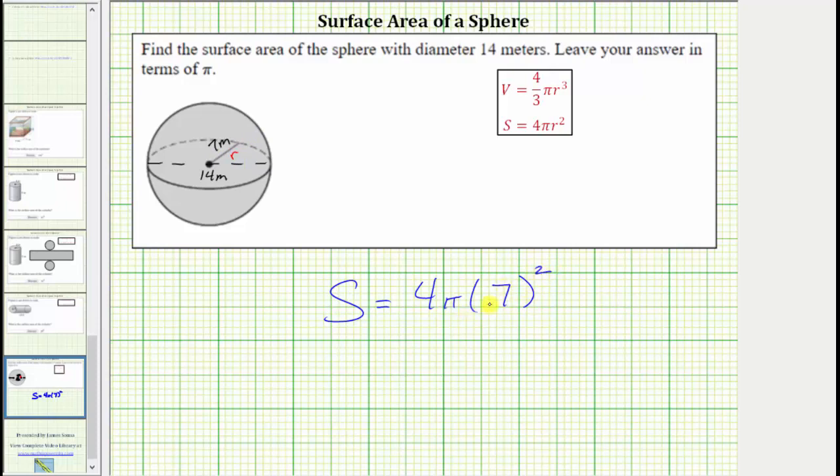Simplifying, 7 squared equals 49. 49 times 4 equals 196 times pi, gives us a surface area of 196π, and the units are square meters.